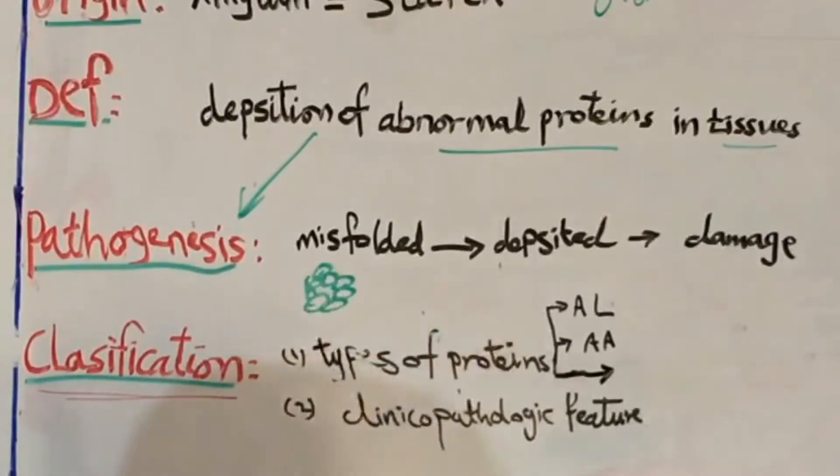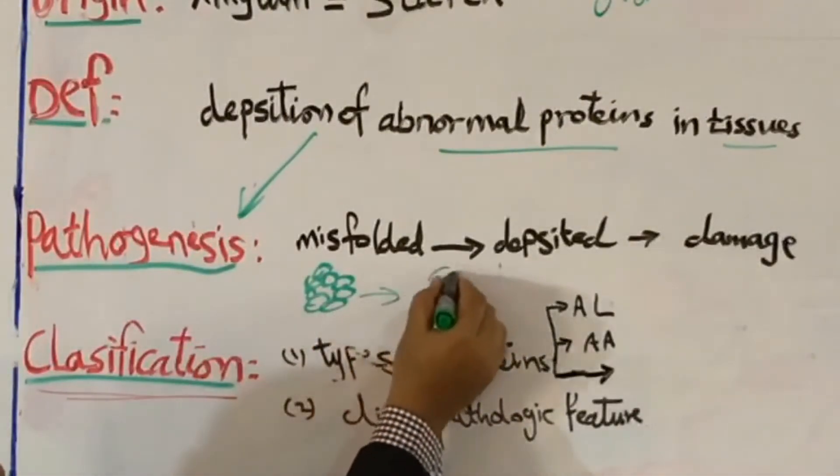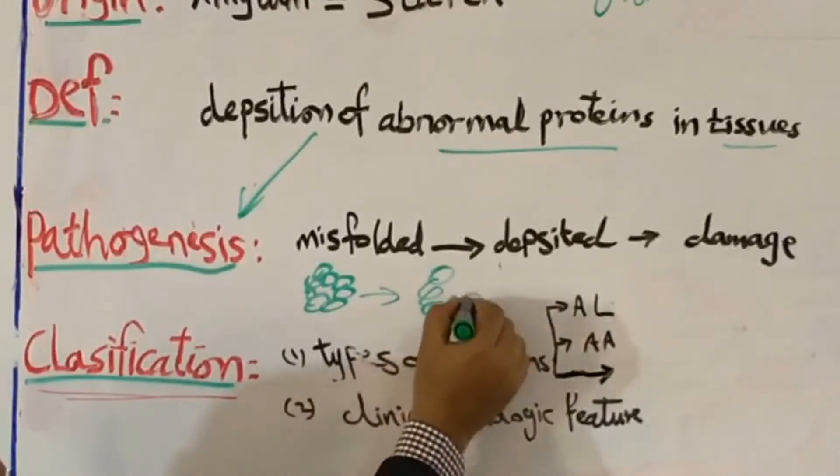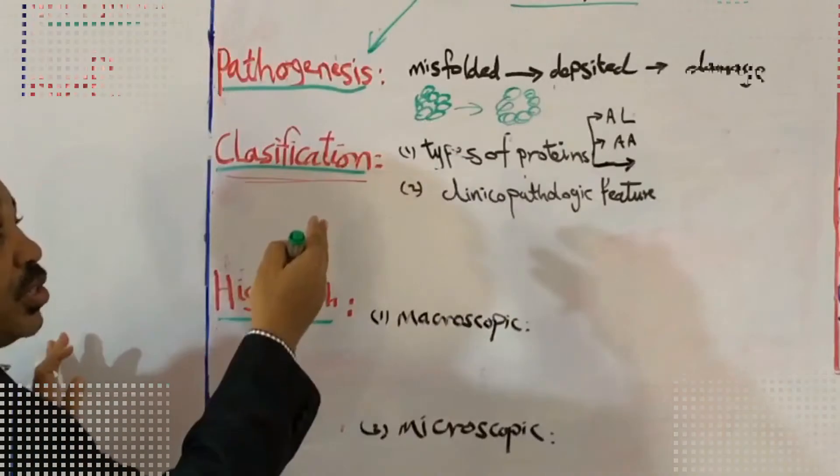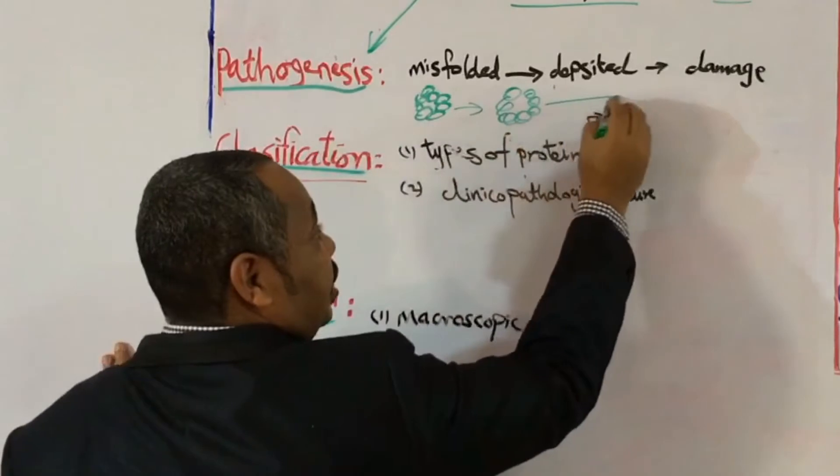It will be folded like this. So in this case, there is misfolding of these proteins, maybe because they are produced in excess. These proteins are produced in excess. So failure of degradation of this protein results in misfolding and then deposited in tissues.